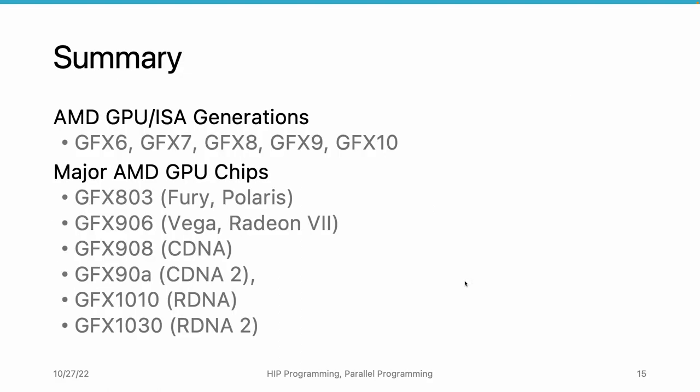As a summary, we have introduced seven big generations of AMD GPUs: GFX6, GFX7, GFX8, GFX9, and GFX10. These major generations also represent different ISAs — different instruction sets. That means if a program is compiled for GFX9, without recompiling it cannot run on a GFX8 GPU; they are not compatible. We have also introduced some major AMD GPU chips like GFX803, GFX906, GFX908, GFX90A, GFX1010, and GFX1030. In this tutorial series, we are basically going to use GFX906, GFX908, and GFX1030 GPUs.